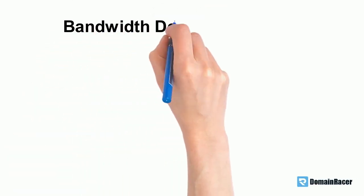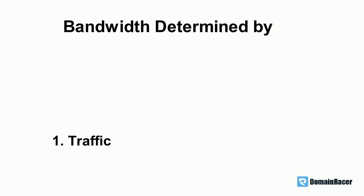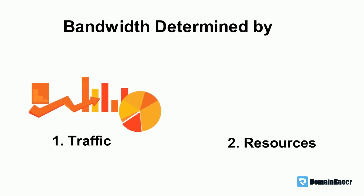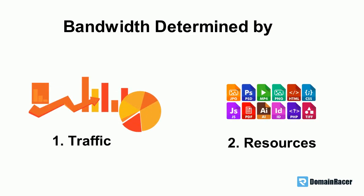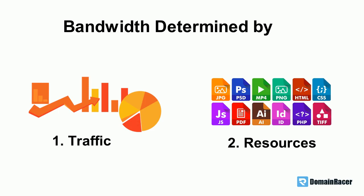There are two ways to determine bandwidth usage. The first one is the amount of traffic to a website, and the second one is the number of resources a website has.